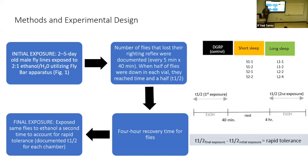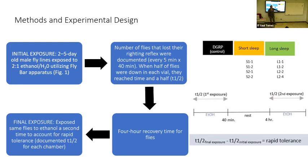For the fly bar assay experimental design, we took two-to-five-day-old male flies and exposed them to alcohol, with each exposure chamber holding 30 flies. The number of flies that lost their righting reflex was documented every five minutes for 40 minutes. Once half the flies were down, we called that T-half for each trial. We then let them have a four-hour recovery time and did the same protocol again to see any difference in T-half. Rapid tolerance is the difference between the final and initial exposure T-half values.